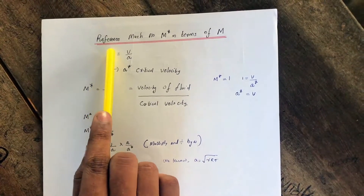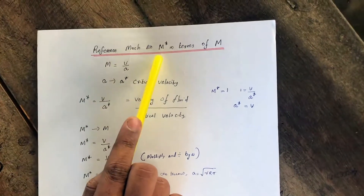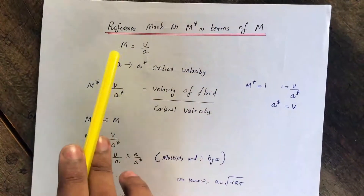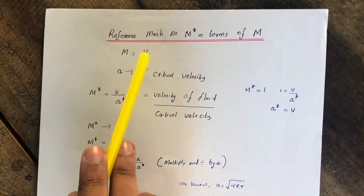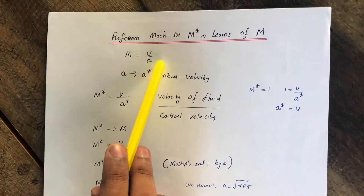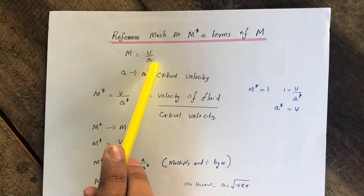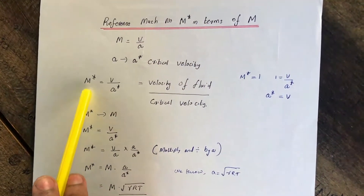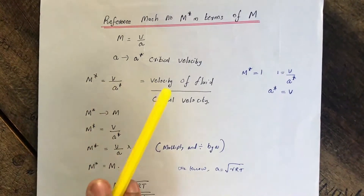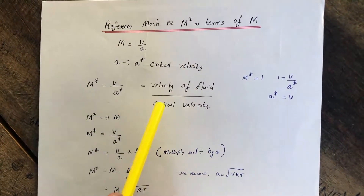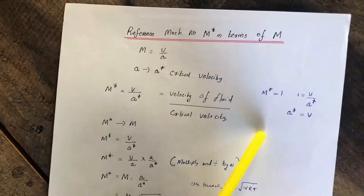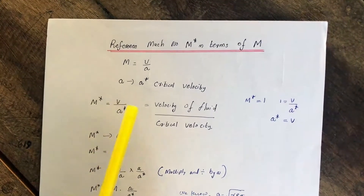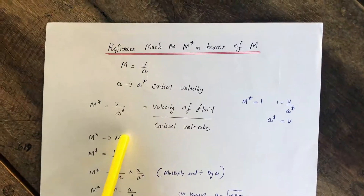Here we are discussing the reference Mach number M* in terms of M. The Mach number M is the ratio of the velocity of a fluid in a particular medium to the velocity of sound in that same medium. The reference Mach number M* is the ratio of the velocity of fluid to the critical velocity of sound in that medium. Our aim is to derive M* in terms of M, the normal Mach number.